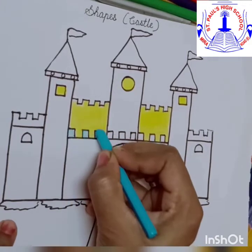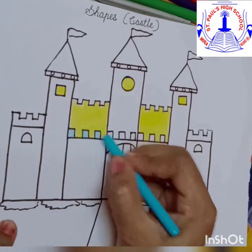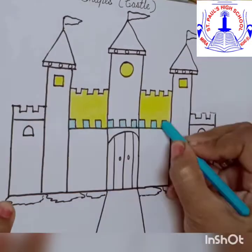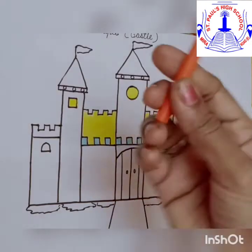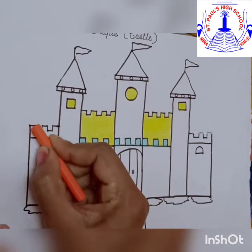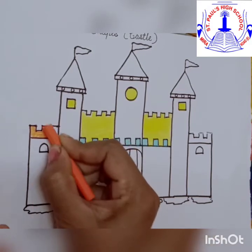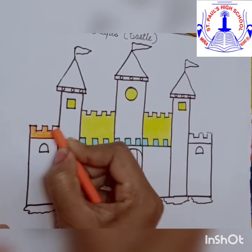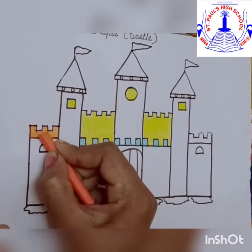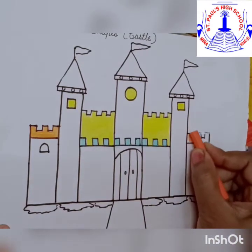Let's colour the square shape with blue colour. Children, you can make a choice of your colours and make it look more beautiful. Wow, that's looking so pretty.